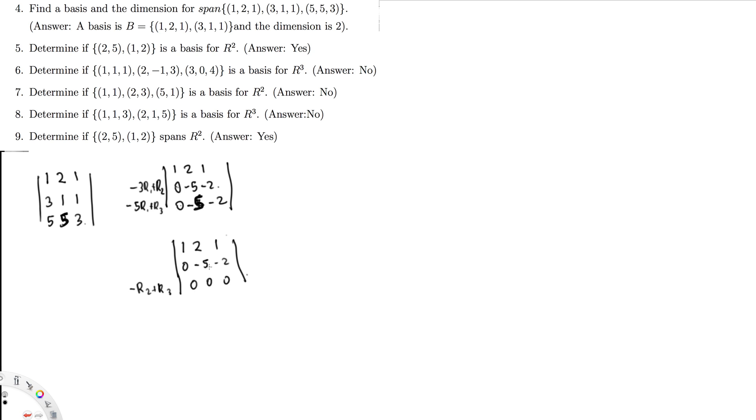Then I can simplify the second row by dividing it by negative 5. So if I divide that, it's going to be 1, 2, 1 then 0, 1, 2 over 5. I'm dividing by minus 5. Then I have to eliminate the value above the pivot. I multiply the second equation by negative 2 and add it to the first: minus 2 R2 plus R1. Minus 2 times 2 over 5 is minus 4 over 5 plus 1 equals 1 over 5. So we get 1, 0, 1 over 5 then 0, 1, 2 over 5, then 0, 0, 0.